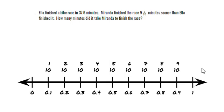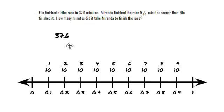Now this word problem says: Ella finished a bike race in 37 and 6 tenths minutes. Miranda finished the race 9 and 1 tenth minutes sooner than Ella finished it. How many minutes did it take Miranda to finish the race? The first thing I notice is that this is in decimal form and this is in fraction form, so we need to convert them both to the same thing. Let's write them both as a decimal. So we have 37 and 6 tenths, and then 9 and 1 tenth — with 9 as our whole number and 1 tenth as our decimal. So this is the same thing as this.